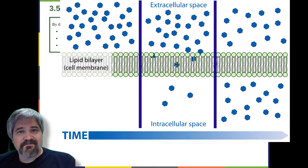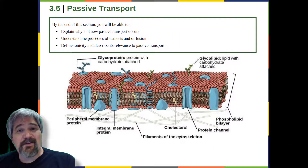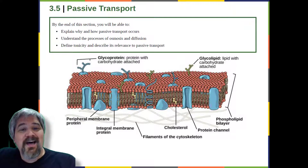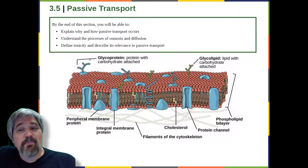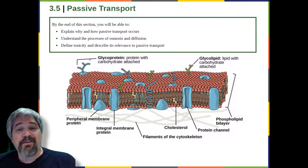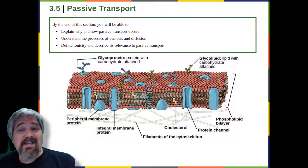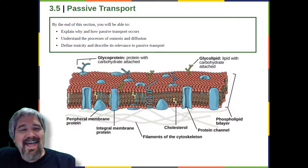Selective permeability. Plasma membranes are asymmetric, meaning that despite the mirror image formed by the phospholipids, the interior of the membrane is not identical to the exterior of the membrane. Integral proteins that act as channels or pumps work in one direction. Carbohydrates, attached to lipids or proteins, are also found on the exterior surface of the plasma membrane. These carbohydrate complexes help the cell bind substances that the cell needs in the extracellular fluid, which adds considerably to the selective nature of plasma membranes.